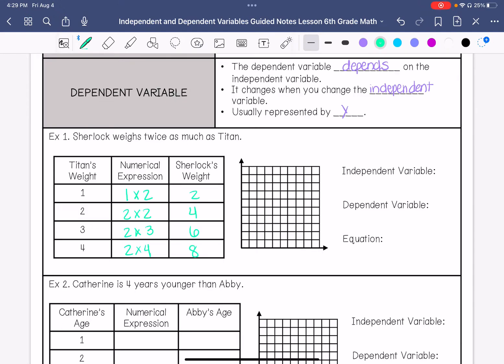My independent variable, the one that we are changing that's not depending on something else, is Titan's weight. Based on this statement, Sherlock's weight depends on Titan's weight. And my equation is y equals 2 times x.